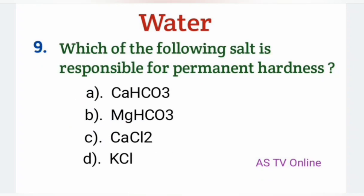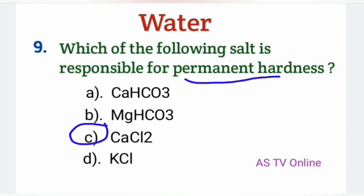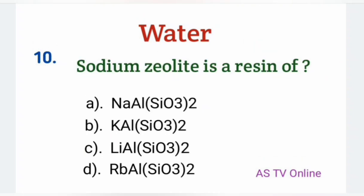No. 9: Which of the following salt is responsible for permanent hardness? Permanent hardness calcium اور magnesium کے sulfates اور chlorides کی وجہ سے ہوتی ہے تو اس کا right answer ہوگا C، calcium chloride. پہلے دو calcium اور magnesium کے bicarbonates ہیں ان کی وجہ سے temporary hardness ہوتی ہے.